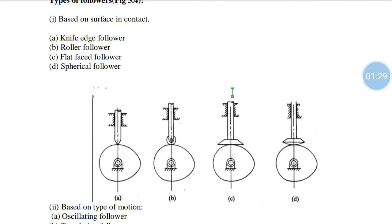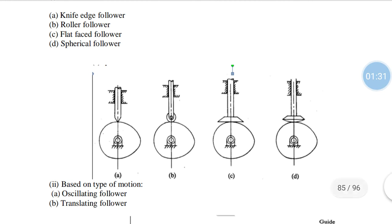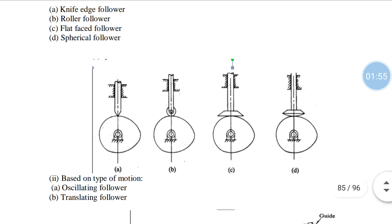Another one is the spherical follower. The spherical follower is more advantageous than the other three types because the sphere provides constant accuracy. In the knife edge follower, if used continuously, wear and tear takes place at the knife edge — the edge gets worn out, and there becomes a surface contact, causing more friction.